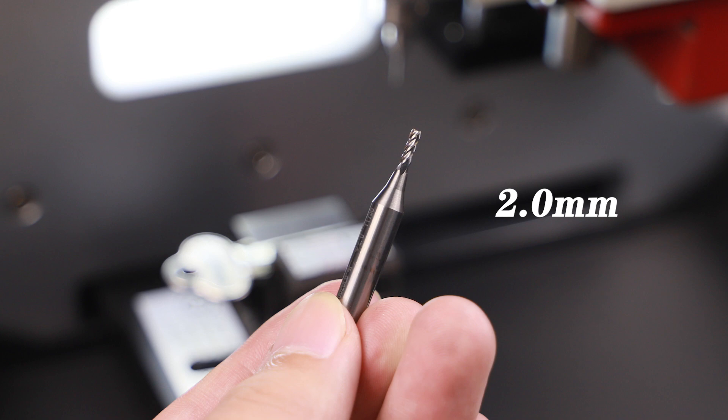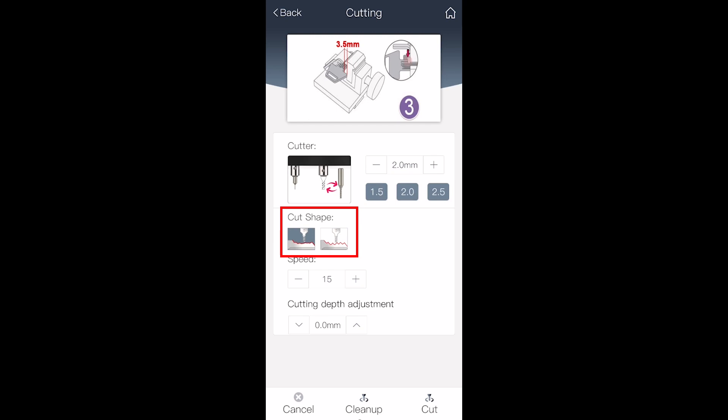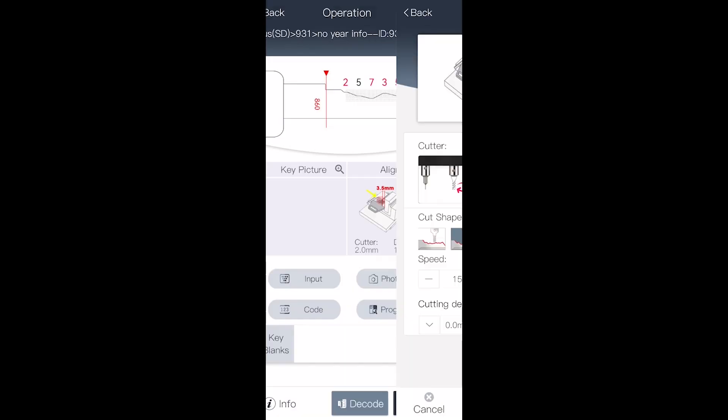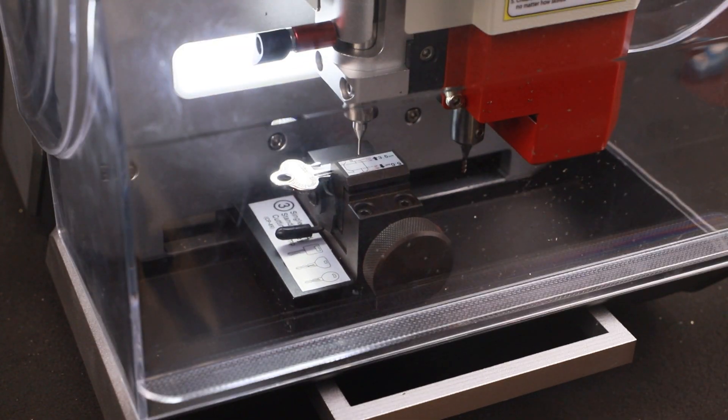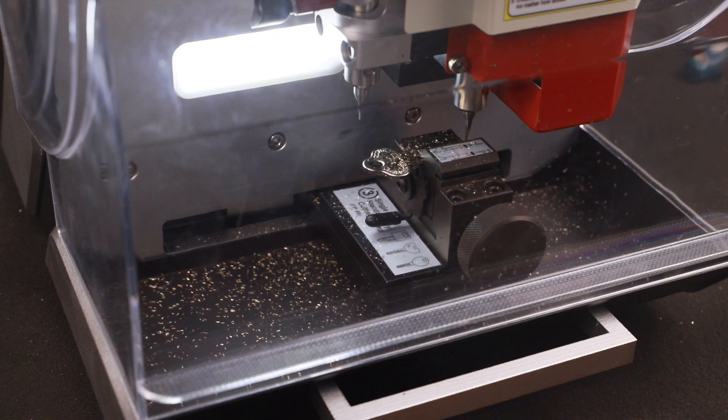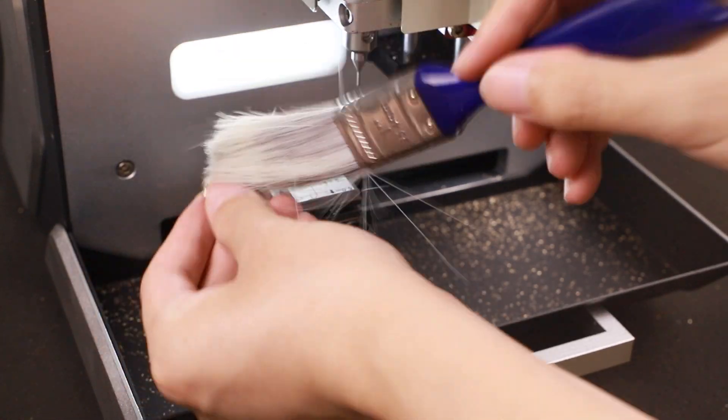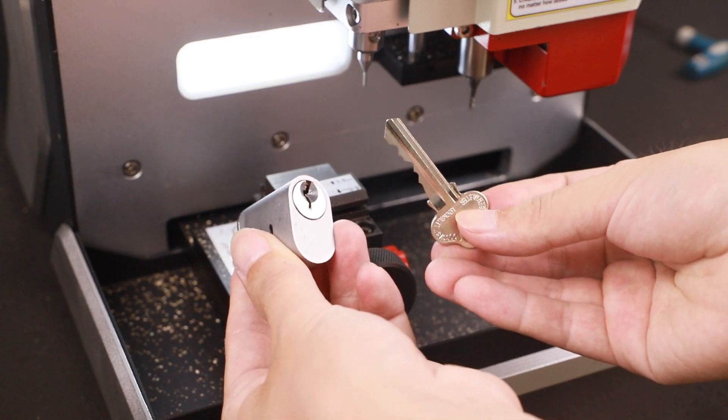Also make sure the cutter is 2.0 millimeters cutter, same as software cutter settings. Choose cut shape as peak cutting shown in the figure, then click cut to start cutting. Cutting is done. Please clean shavings and test that the new key works well.